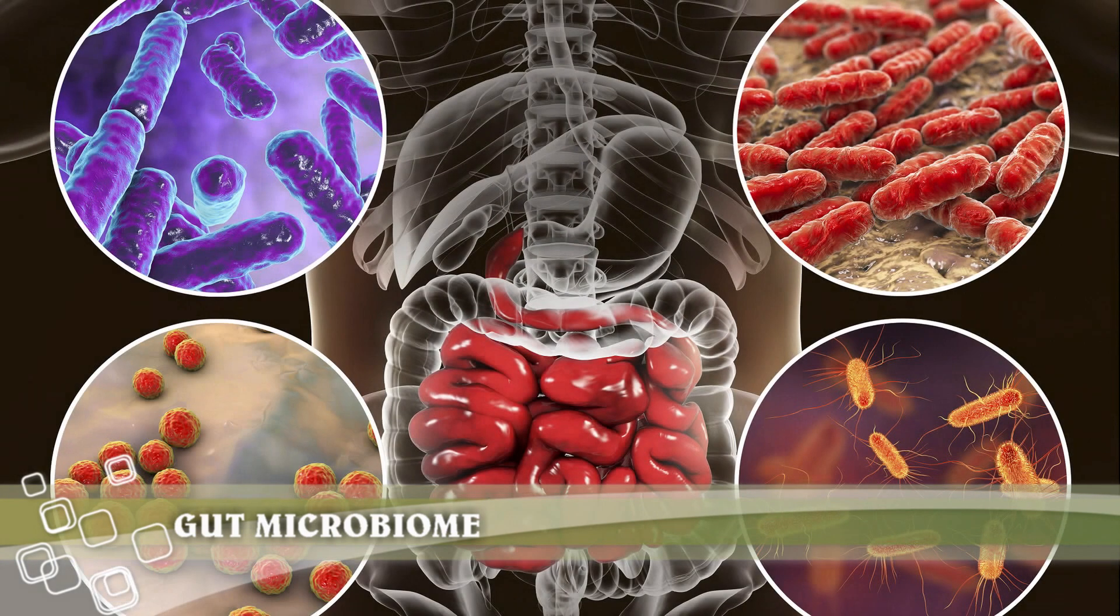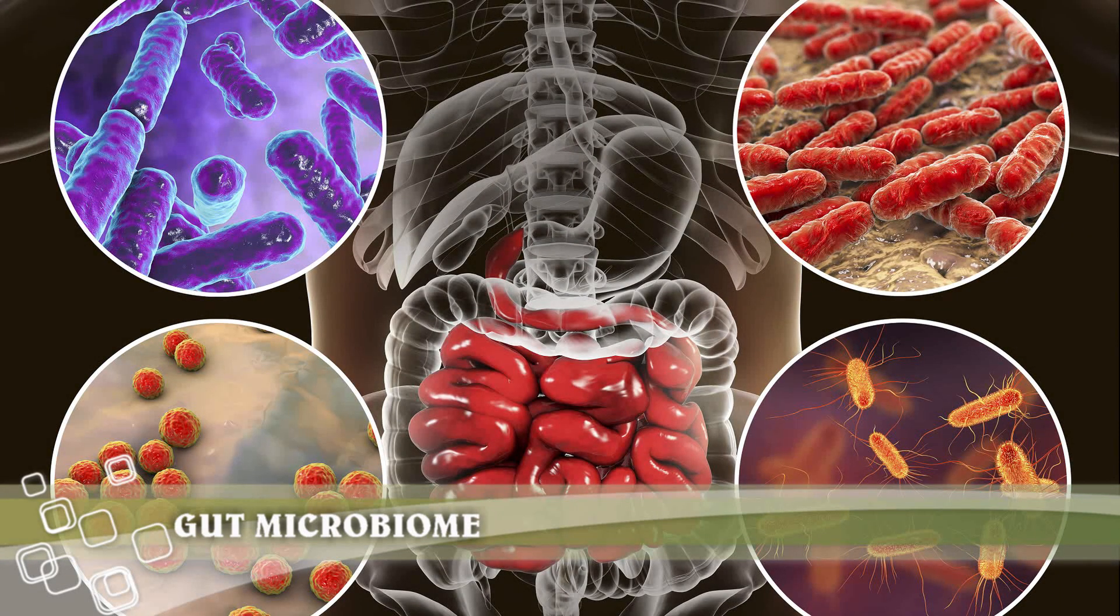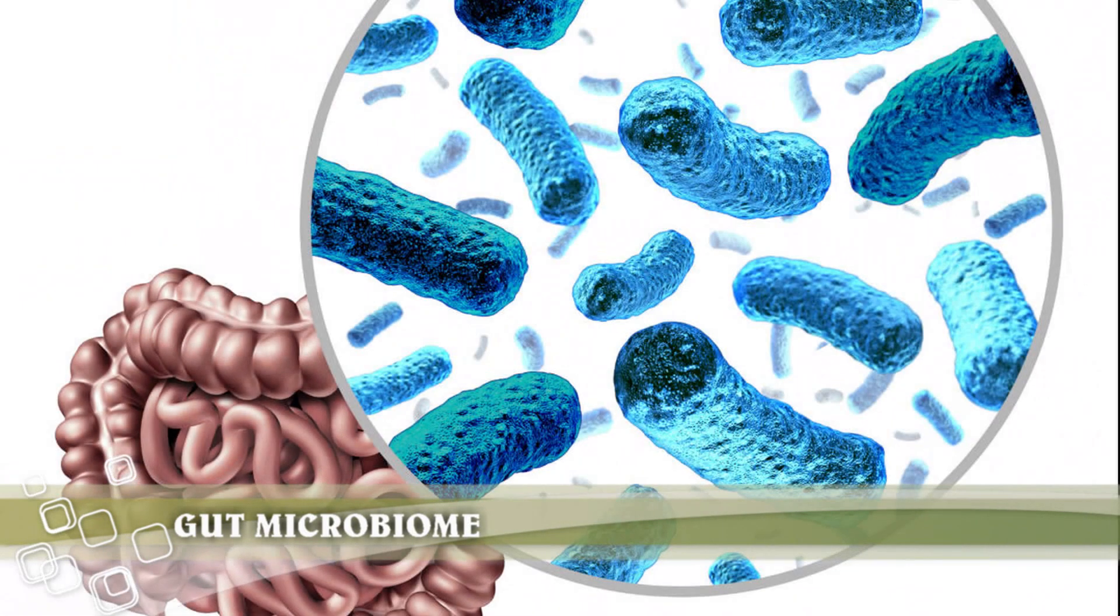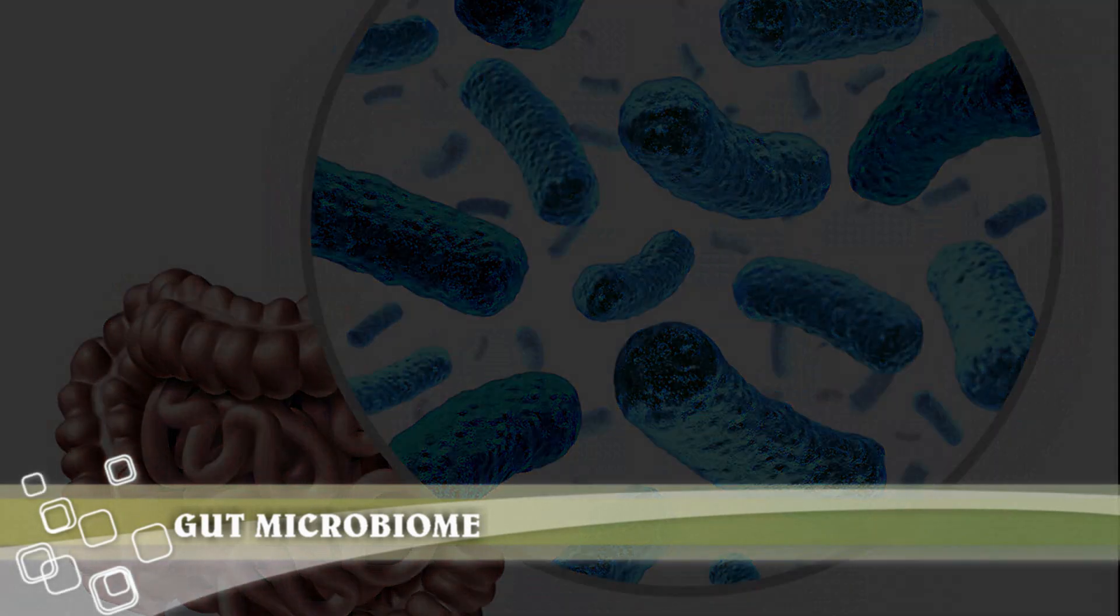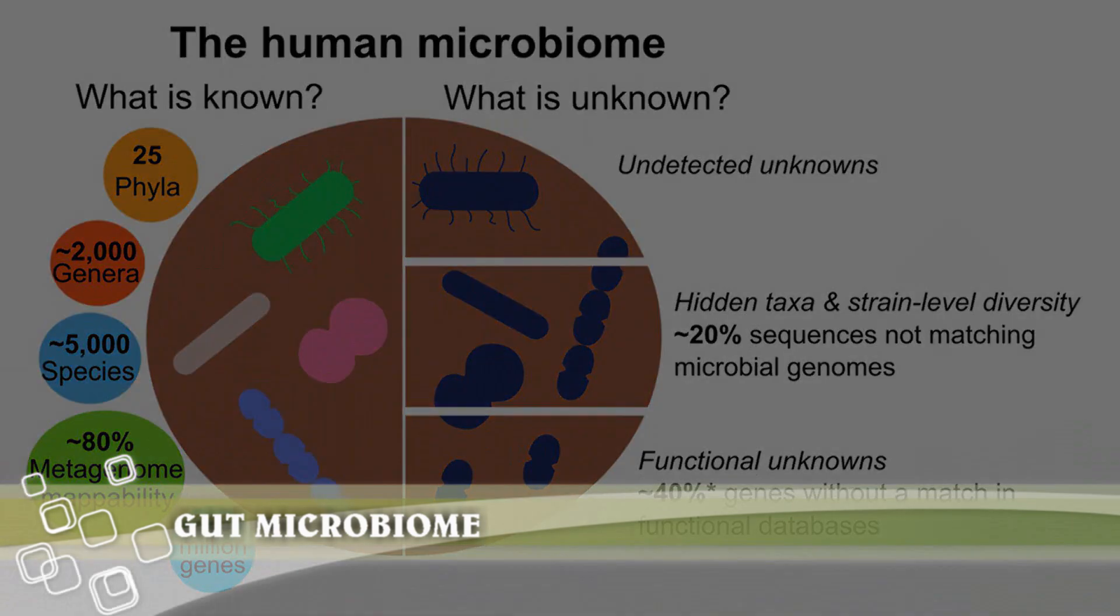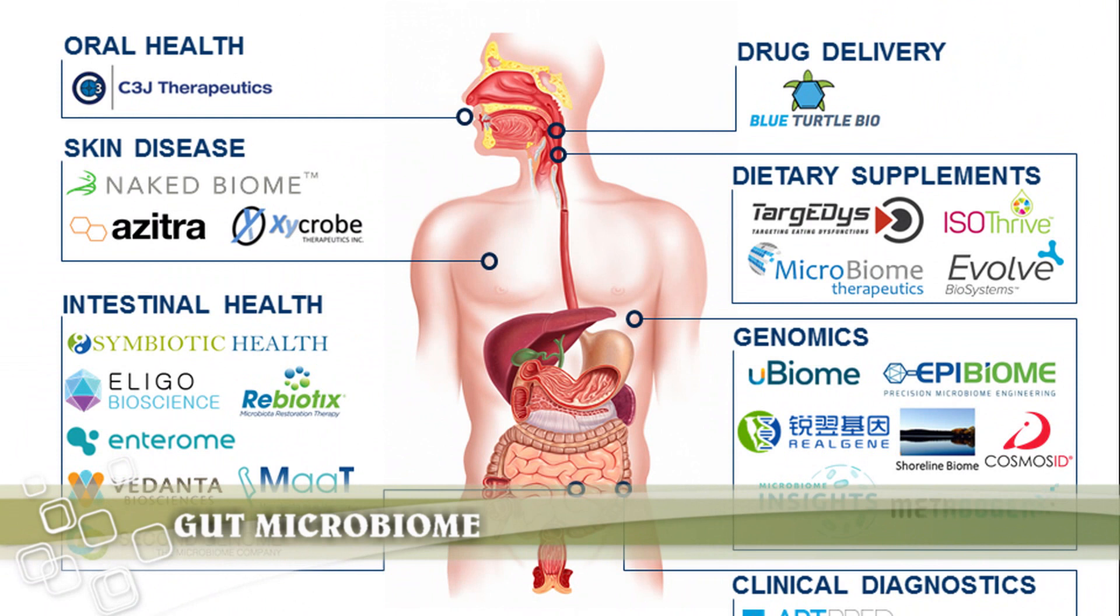A number of studies have shown that people with various psychological disorders have different species of bacteria in their guts compared to healthy people. This suggests that the gut microbiome may affect brain health. However, it's unclear if this is simply due to different dietary and lifestyle habits. A small number of studies have also shown that certain probiotics can improve symptoms of depression and other mental health disorders.